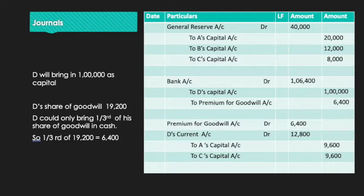Journal Entry 2: For D's capital contribution and the one third of goodwill brought in cash — Bank Account Dr. 1,06,400; To D's Capital Account 1,00,000; To Premium for Goodwill 6,400.